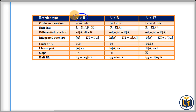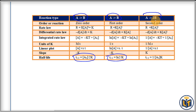Looking at this table, for a zero-order reaction, this is the relation between half-life and rate constant. For a first-order reaction, this is the relation between rate constant and half-life. This is also shown for second order. Since our problem involves a first-order reaction, we will apply the first-order formula.